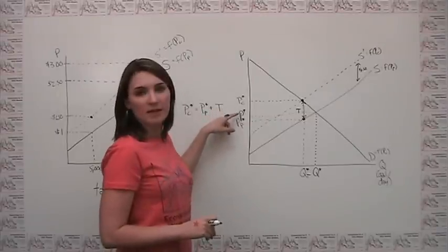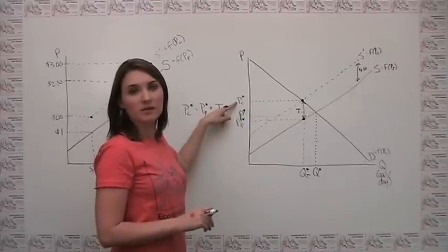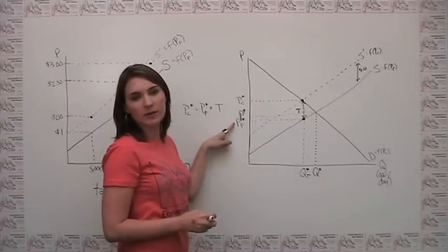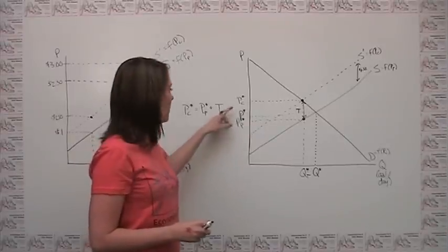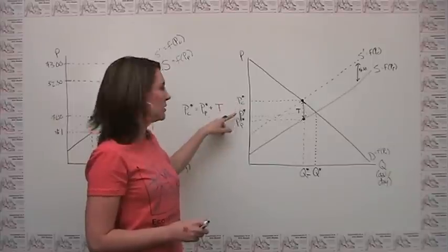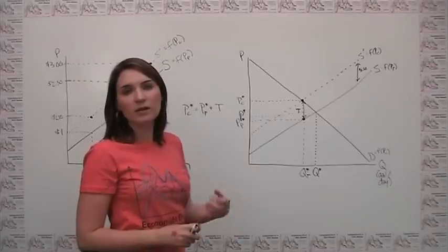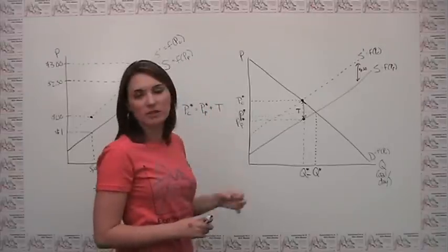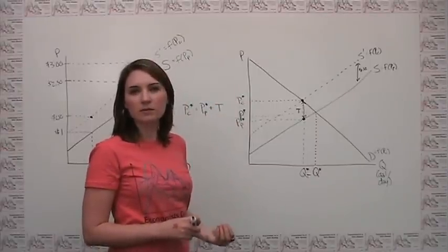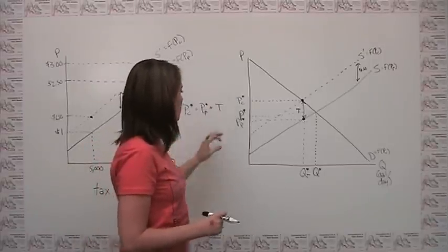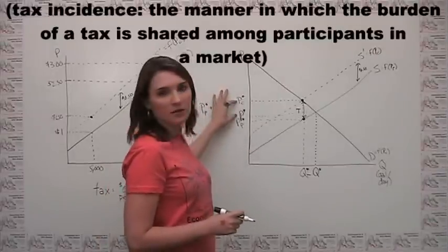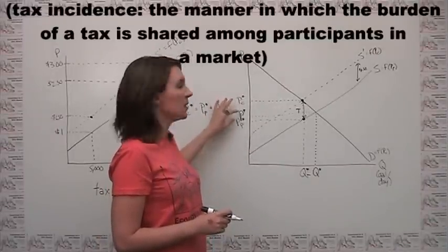Qualitatively, when the tax is put in place, the price to the consumer goes up — meaning the consumer pays more than before — and the price to the producer goes down, meaning the producer keeps less than before. Note, however, that they don't necessarily change by the same amount. It's quite possible that the increase in price to the consumer is greater than the decrease in price to the producer, or vice versa. We'll come back later to show how these price changes relate to elasticity of supply and demand. For now, keep in mind that the original price does not have to sit right in the middle — that's a common mistake. The concept of tax incidence refers to the distance between the price with the tax for either the consumer or the producer and the original no-tax price.